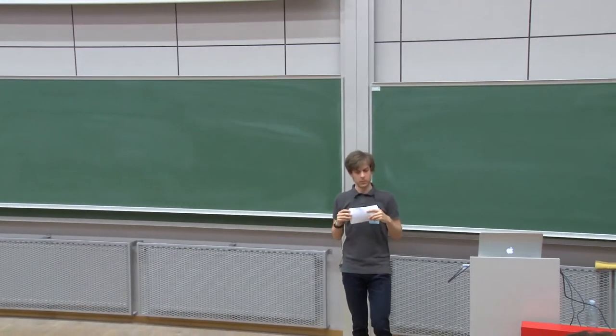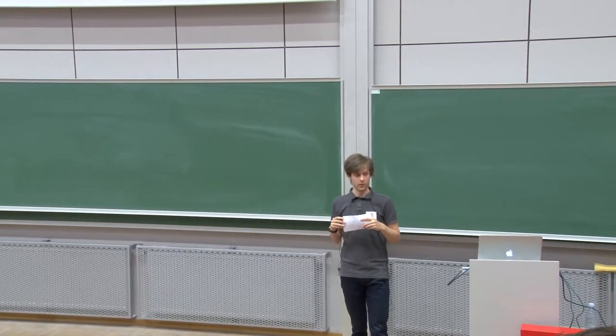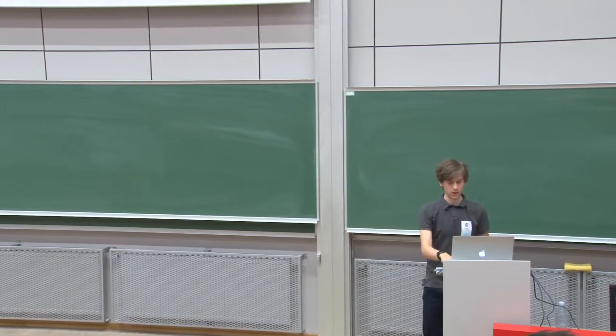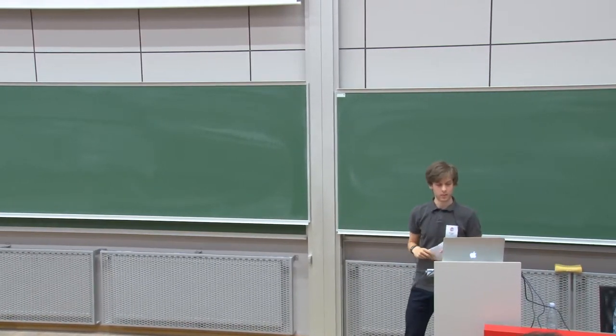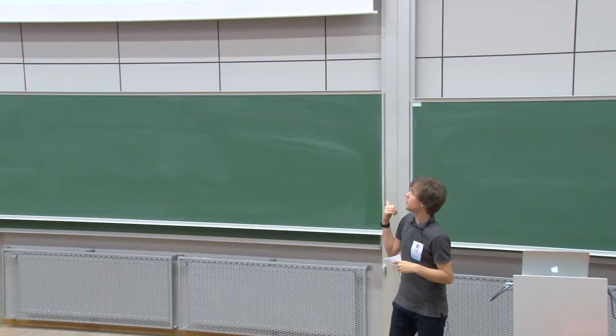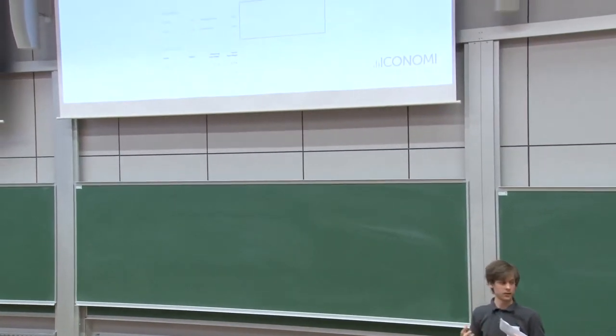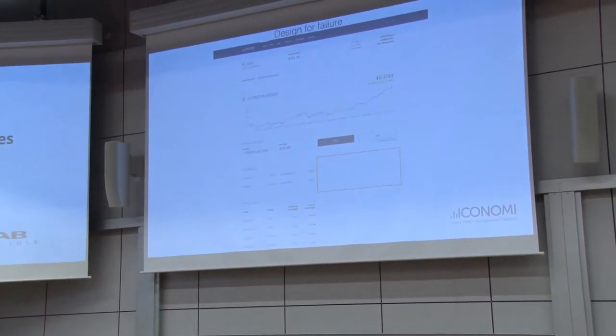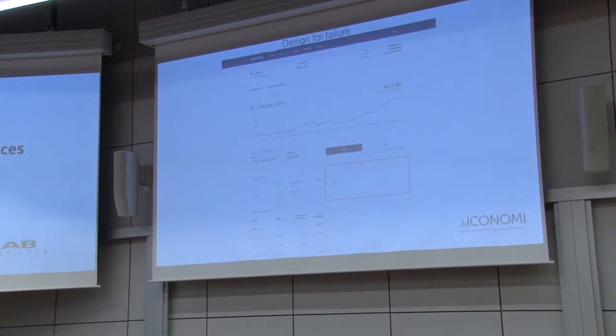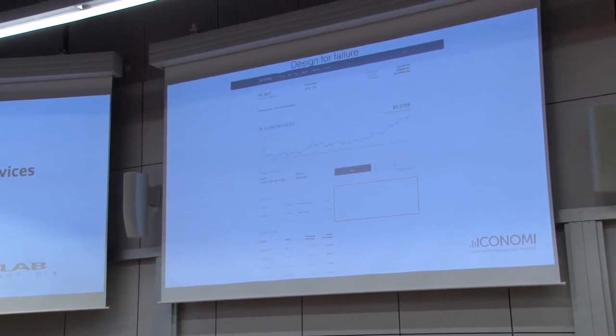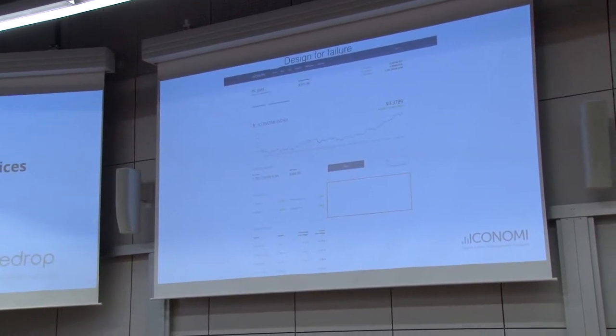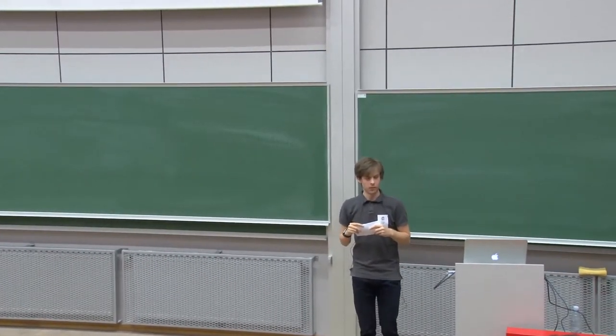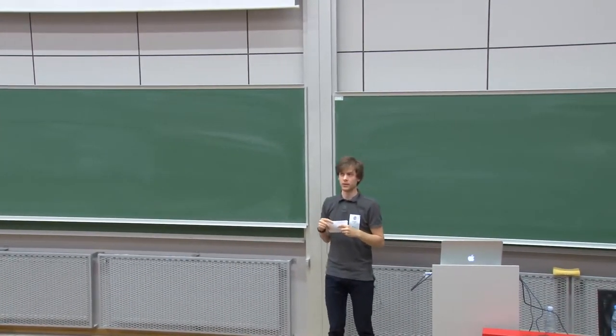And by designing for failure, we eliminate this issue to a lot smaller one. For example, we get something like this. Instead of not having the whole system, we only don't have a description. And this is something users will tolerate a lot better. And by designing for failure religiously, we will get more robust and scalable system.